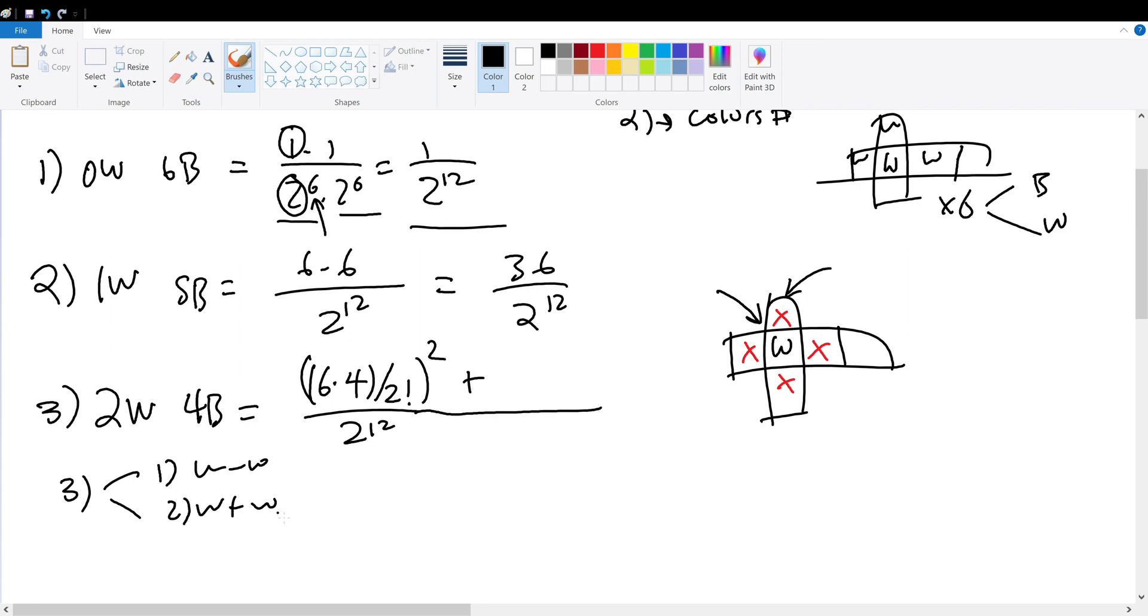Now let's consider the second subcase, which is that the W and W are not adjacent. If the X positions are the adjacent ones, then this Y position must be the non-adjacent one. Therefore, for the first cube, for the first white cube, we have six choices. Then we have only one choice for the second, divided by 2 factorial, and we have to square this, because we have two cubes. So that is our third case.